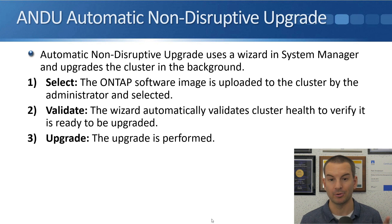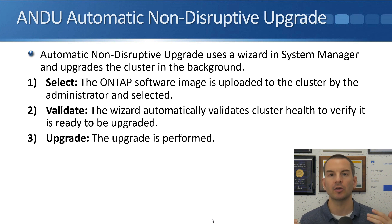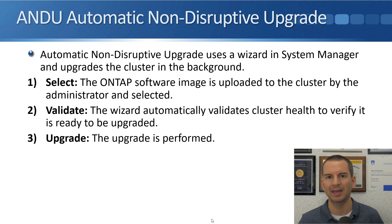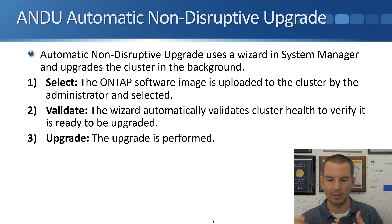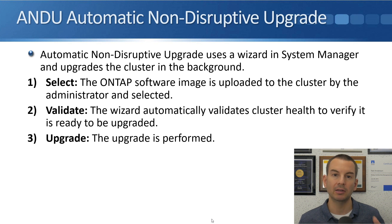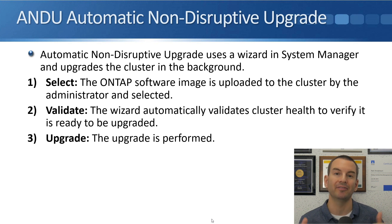At the Validate stage, the System Manager wizard automatically validates cluster health to verify that the cluster is ready to be updated. It runs a load of checks to make sure there are no issues — because if there are issues on your cluster you don't want to be trying to upgrade it at that time. If it doesn't pass the validate stage it won't let you move on to do the upgrade. It gives you a full report of what the issues are and tells you the remedial action that you need to take. You then go and fix those issues and come back to try the upgrade again. When it has passed the validate stage the last stage is Upgrade, where the upgrade is actually performed. Using ANDU it's a very simple wizard — just three steps which are basically next, next, next — and the system does most of the work for you.